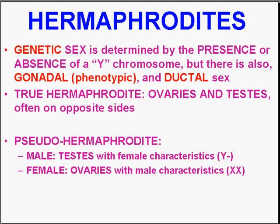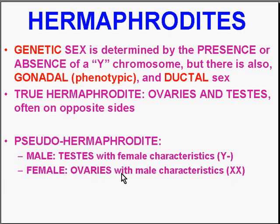When you hear the term hermaphrodite, they're usually referring to a pseudo hermaphrodite. A male pseudo hermaphrodite has testes but also has female phenotypic characteristics — male meaning at least one Y chromosome. A female pseudo hermaphrodite has two X chromosomes and ovaries but has some male phenotypic expressions.